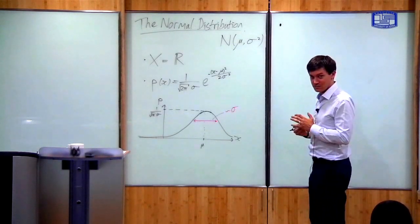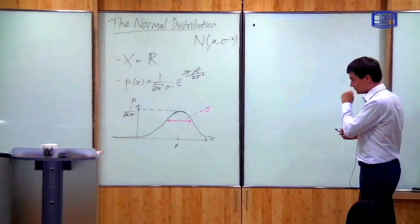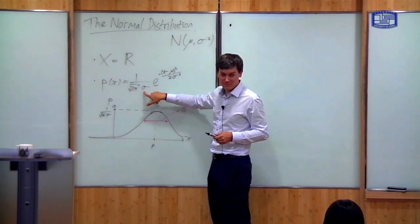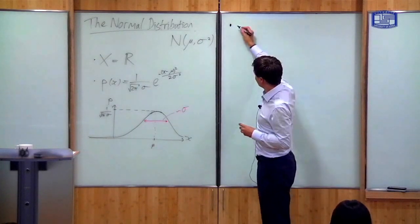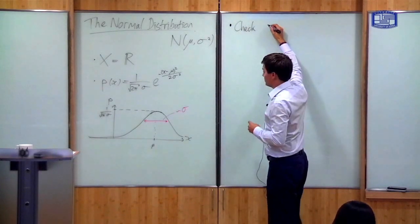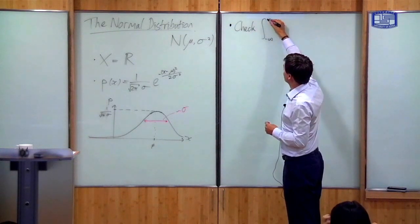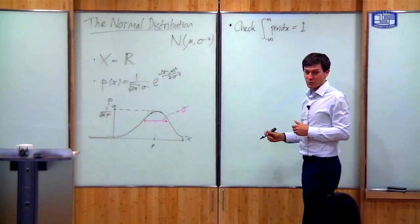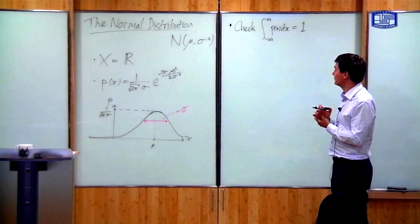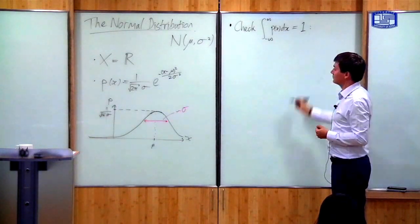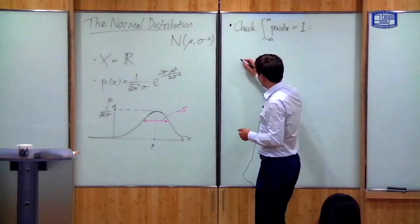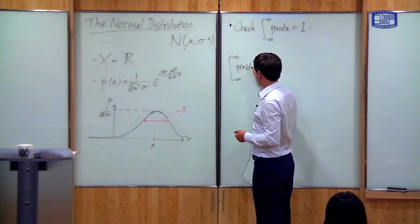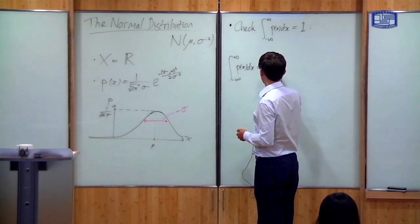I want to get some results for this normal distribution. The first thing is to explain why there is this factor of √(2π) σ at the front — this is just to normalize the distribution. In other words, we check that the integral over the whole of space of P(x) dx, the total probability, equals 1. So we need to check: the integral from minus infinity to infinity of P(x) dx, which is 1 over √(2π) σ times the integral from minus infinity to infinity of e to the minus (x − μ)² over 2σ² dx.